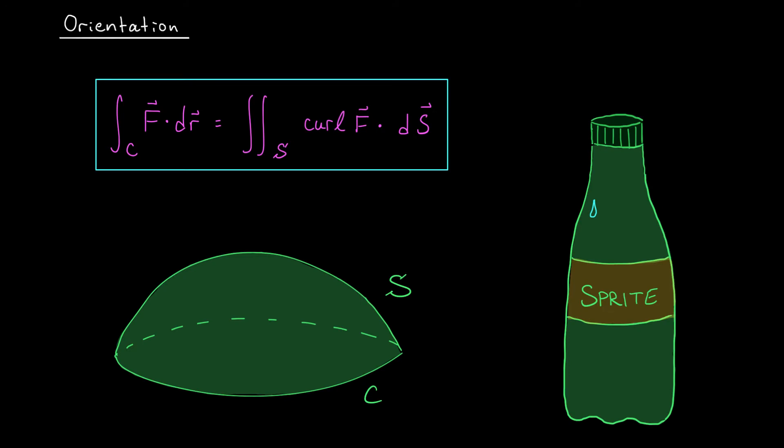Before we jump into an example, we have a small but important matter to discuss. Orientation. Remember, both the curve C and the surface S have some sort of orientation. And if we're going to be switching from a line integral involving C to a surface integral involving S, we need to figure out what happens to that orientation.